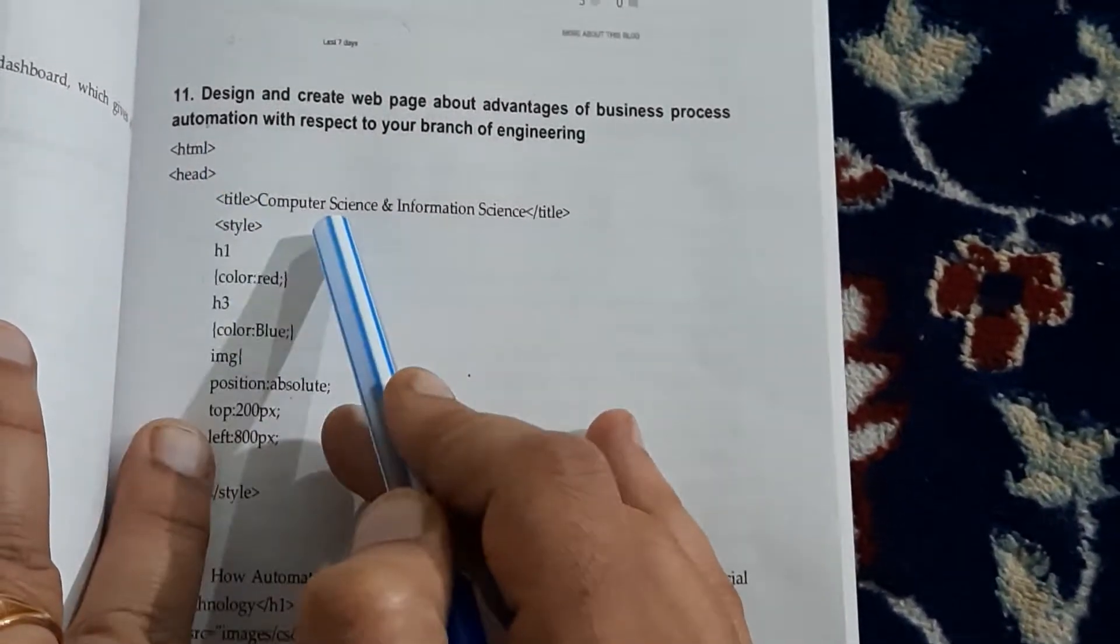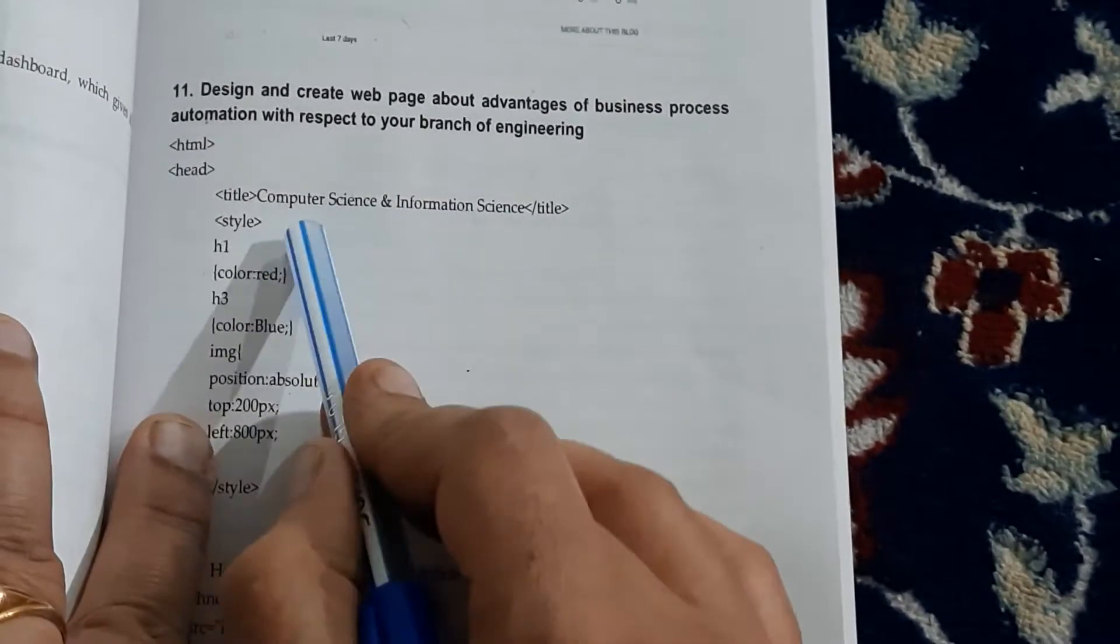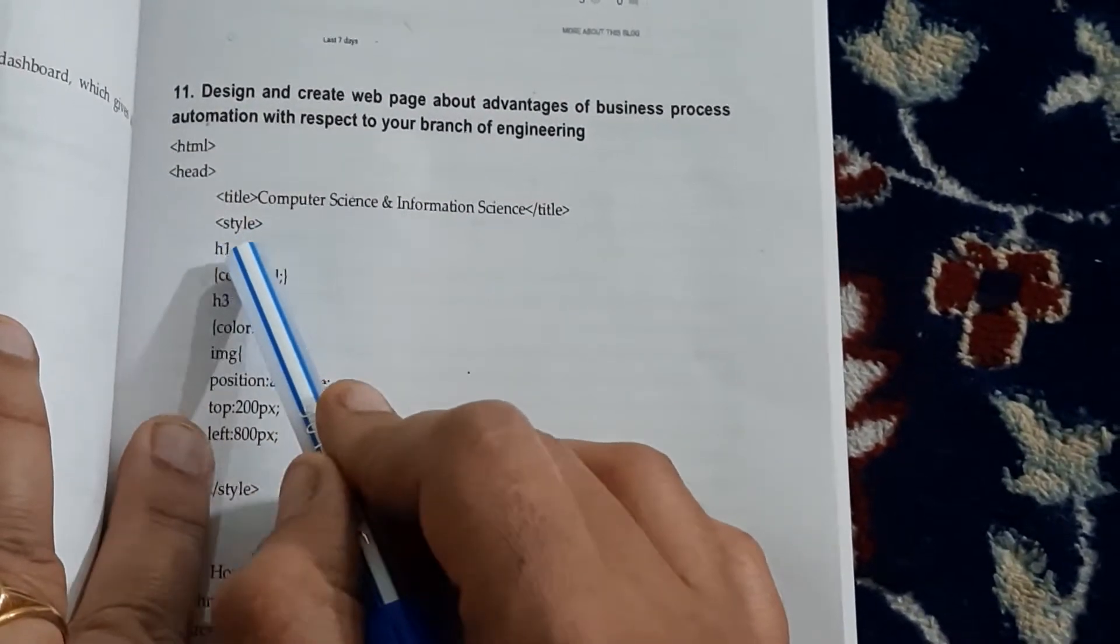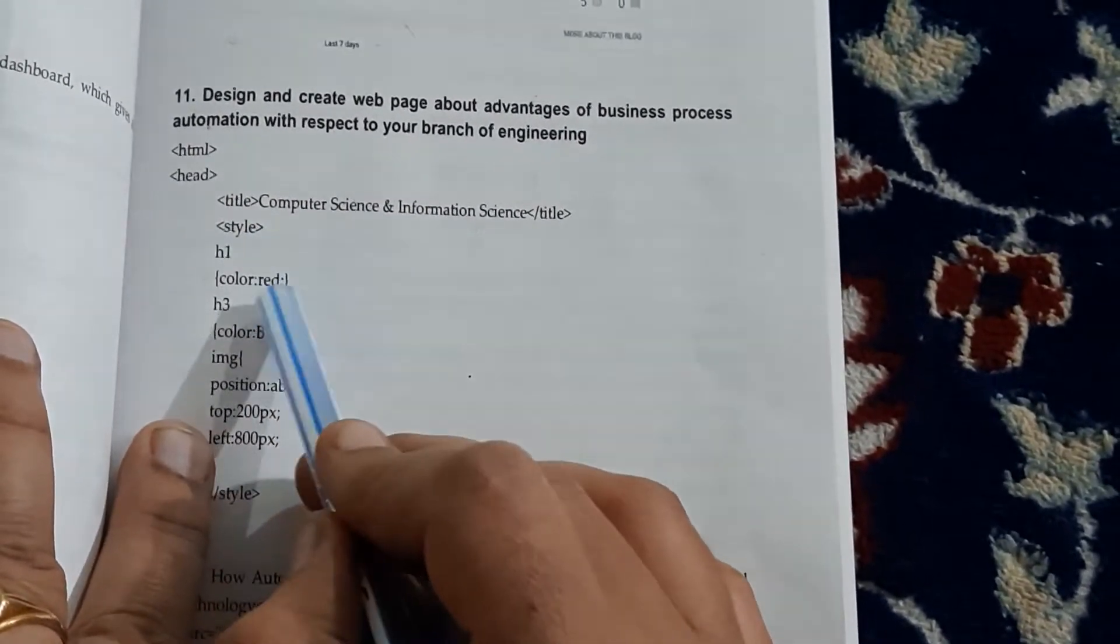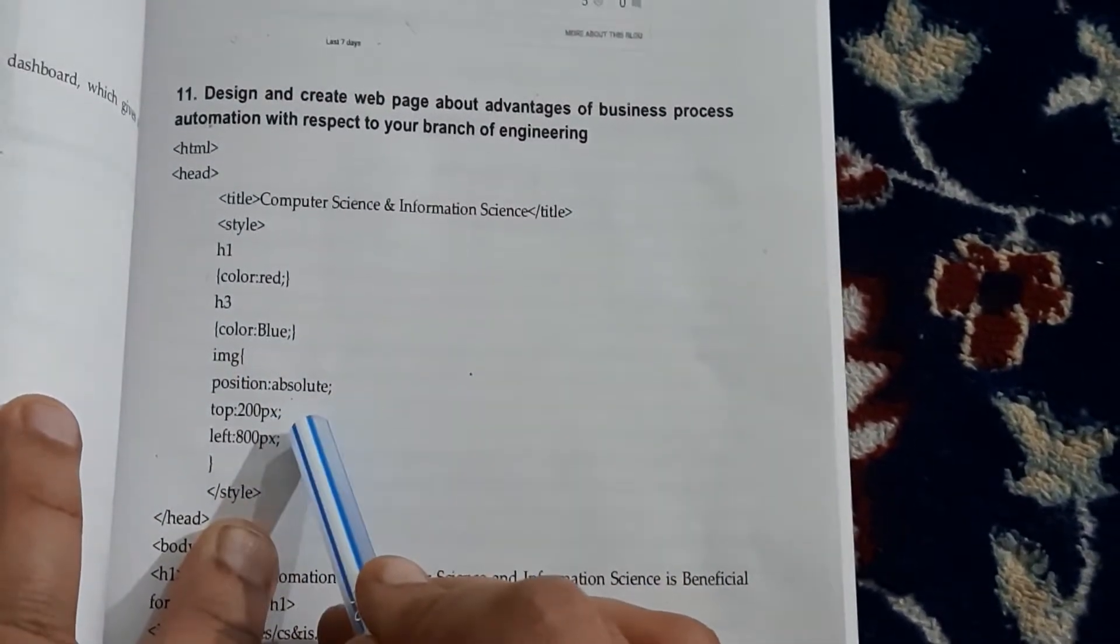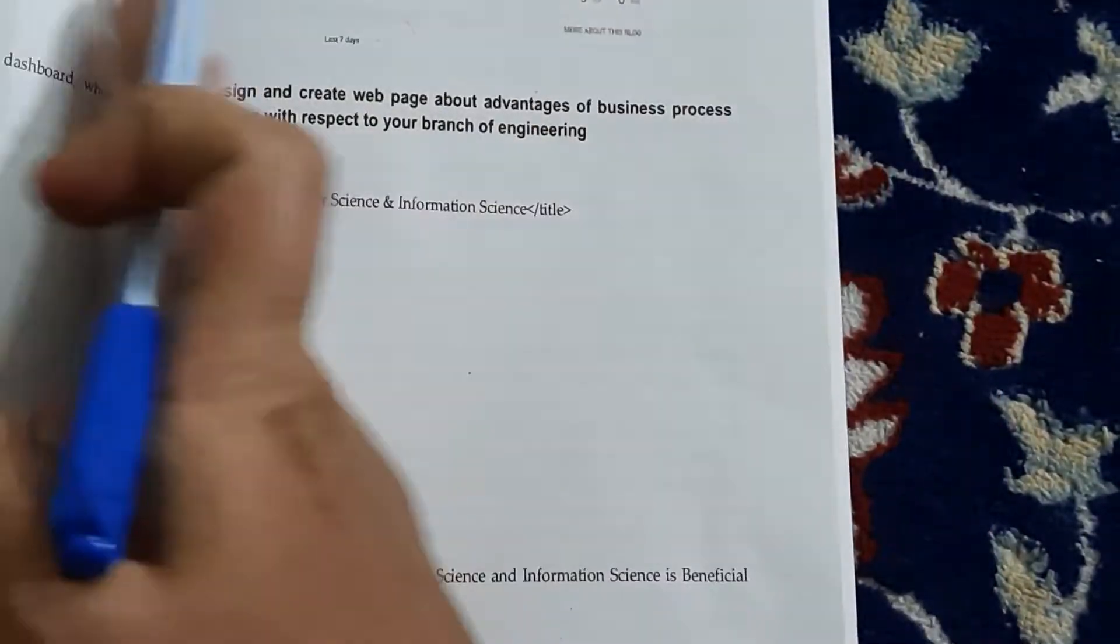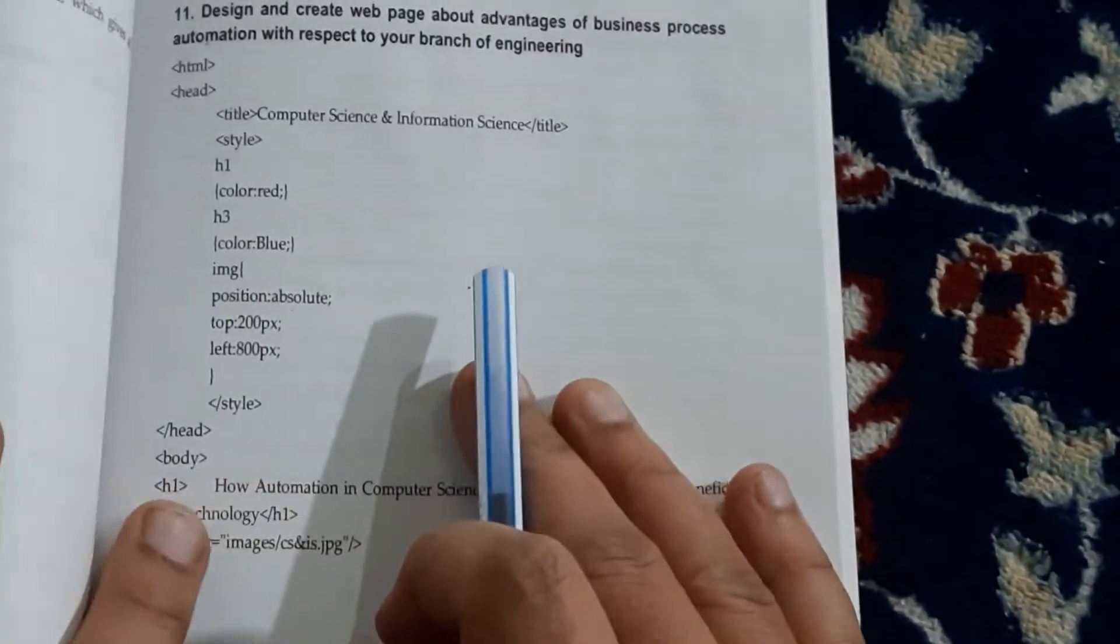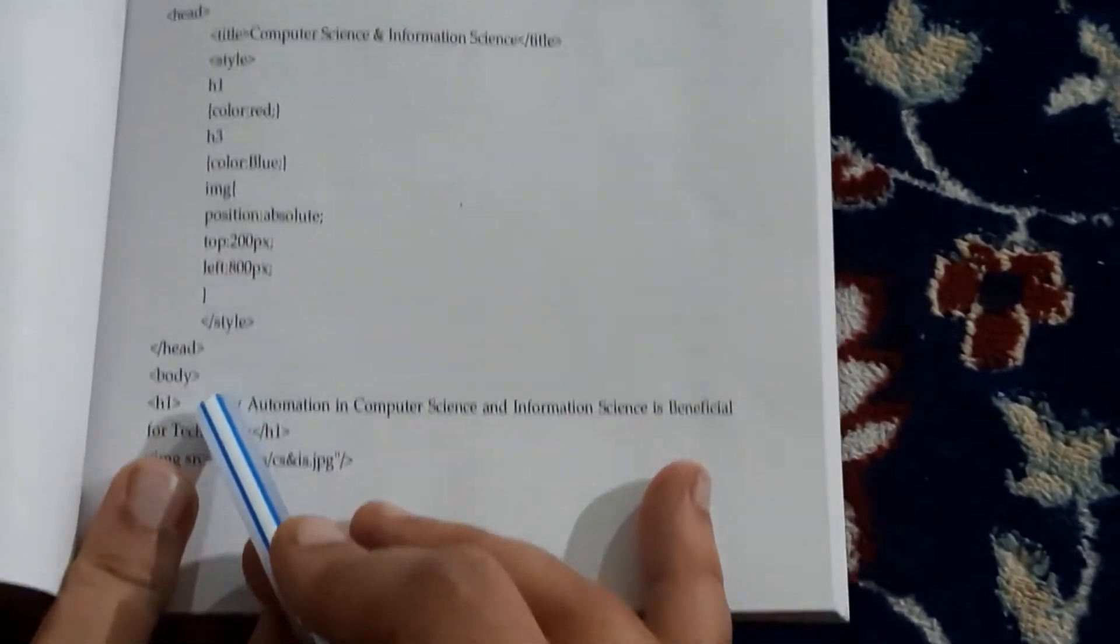Initially we have the HTML head tag, then the title, then style. So we are defining here for heading 1, whenever I use it, it should have red color. Then heading 3, it should have blue color. Then the image, it should appear here 200 pixels from the top and 800 pixels from the left. Style, then head body tag.